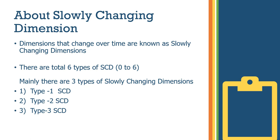Dimensions that change over time are known as slowly changing dimensions. We are actually talking about dimensions in fact tables. Dimensions are nothing but string data and fixed data, while fact tables contain numeric data. There are large tables and short tables. Here we are talking about dimensions that change over time — when changes are more frequent over time.